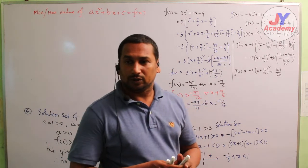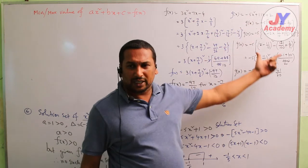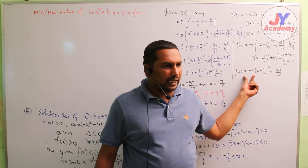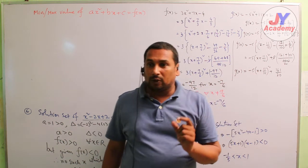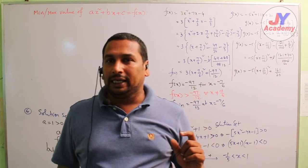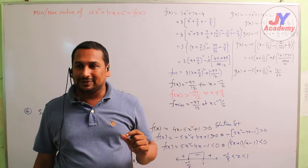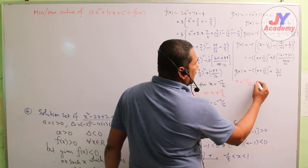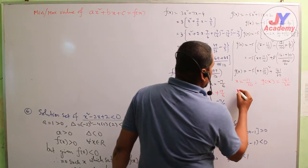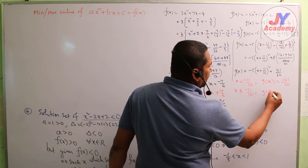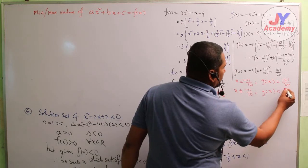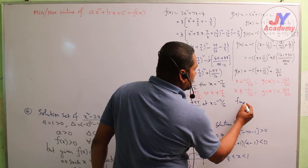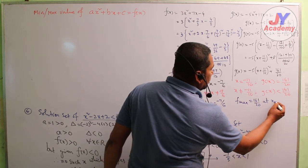Now come to the second example. Here minus 5 is negative — negative into positive is negative. If a negative quantity is added to a number, the resulting value is always less than that number. So if x = minus 11/10, g(x) = 161/20. If x ≠ minus 11/10, g(x) is less than 161/20. Therefore f maximum is equal to 161/20 at x = minus 11/10.